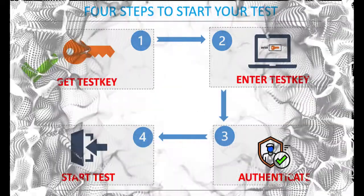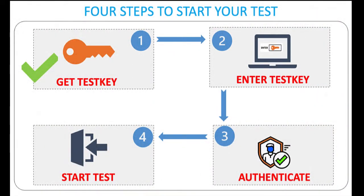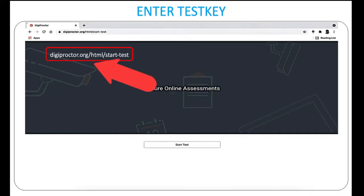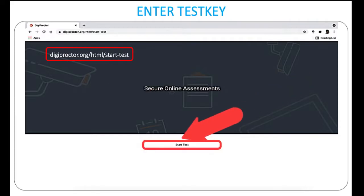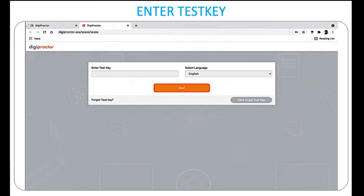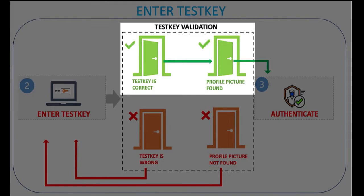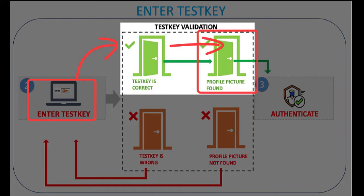After you have got the test key, the next step is to enter your test key into the application. To open the application, enter the URL shown and click Start Test. You will be displayed a page where you will have to enter your test key. When you enter the test key, DigiProctor will validate if your test key is correct and also check if your profile photo is found in the database.